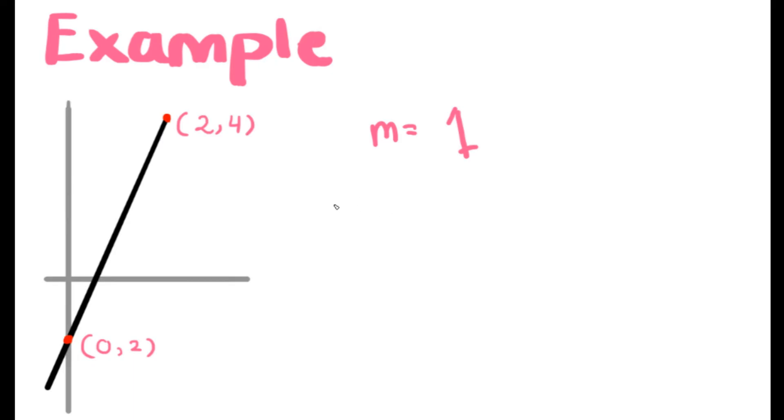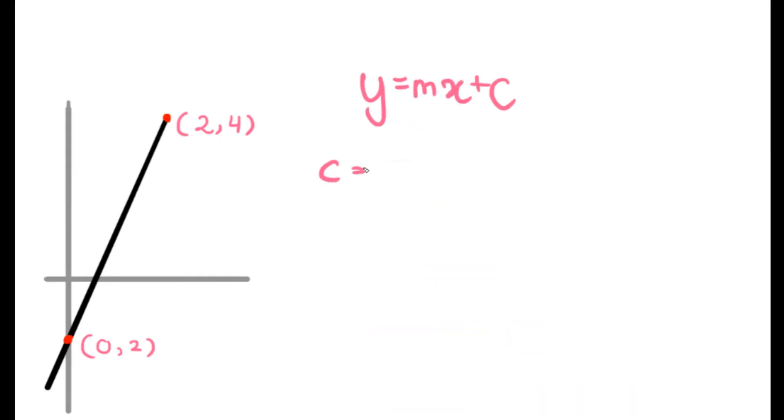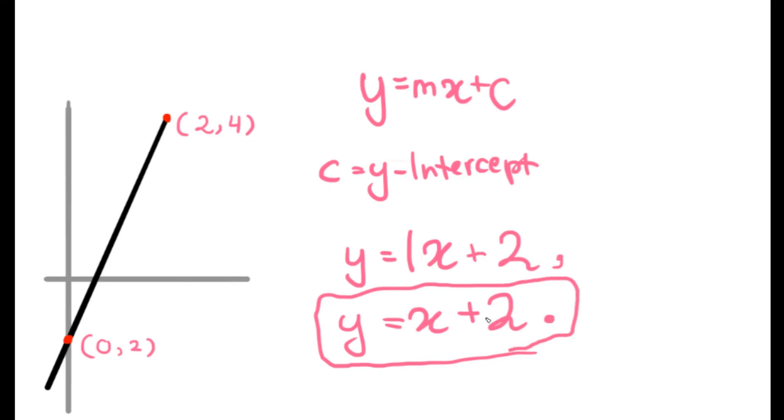So the gradient is 1 and we should put it in the equation of a line segment. The equation will turn out to be y equals x plus 2. If you're questioning what the 2 is, the 2 is the C. The C is the y-intercept, and the y-intercept is the point of the line that touches the y-axis.